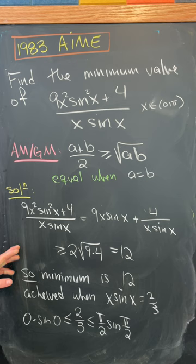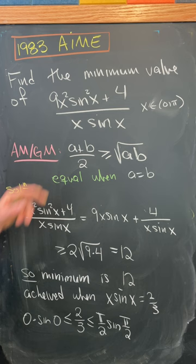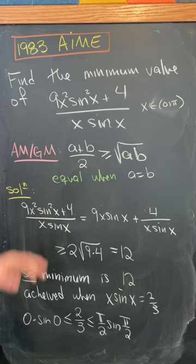And that tells us we should maybe use the AM-GM, the arithmetic geometric mean inequality. That says that a plus b over 2 is bigger than or equal to the square root of a times b with equality when a equals b.